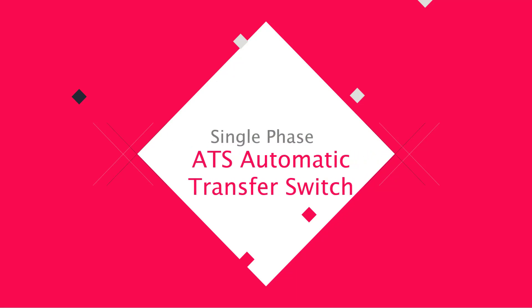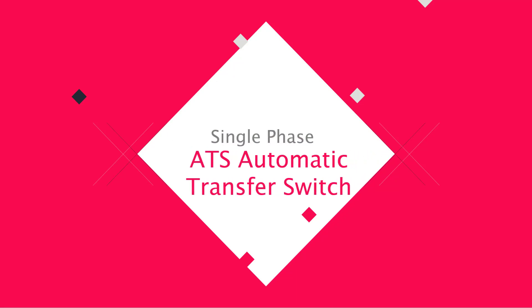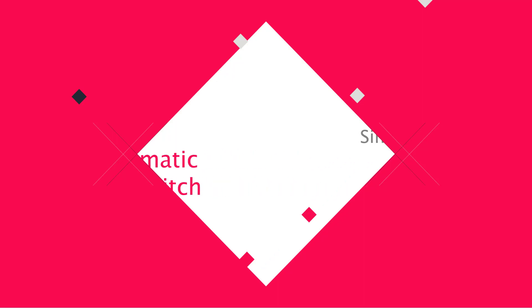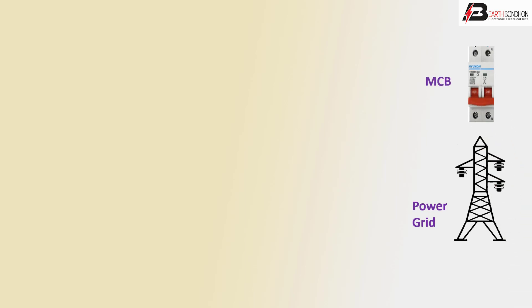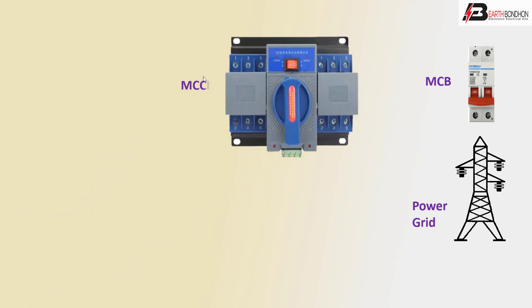Hello viewers, today I discuss the single phase ATS automatic transfer switch. First: grid line main power, second: DP MCB, third: sensor bar MCCB, janitor line or normal grid line power supply.